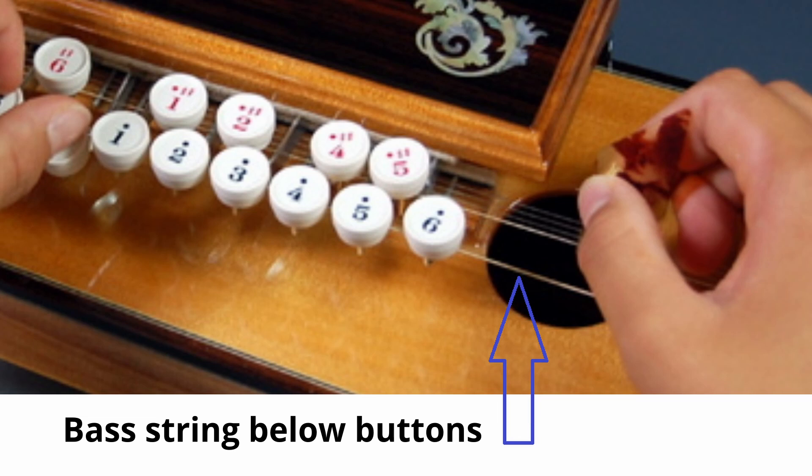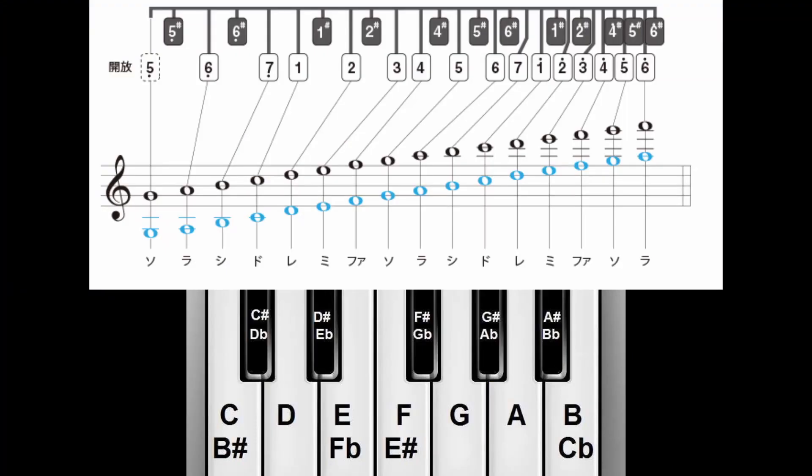The next important thing is how these buttons interact with the strings. This is a lot like a piano. The bottom white buttons are much like the white keys on a piano, and the black much like the black keys on a piano. The white keys are therefore the natural notes, and the black keys are the sharps.